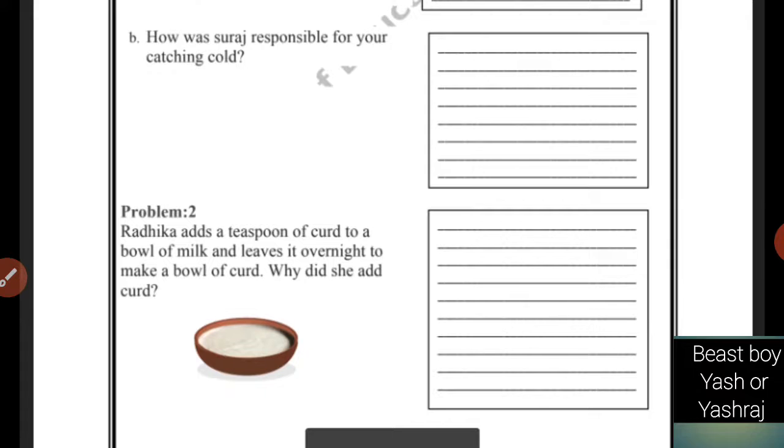Problem 2: Radhika adds a teaspoon of curd to a bowl of milk and leaves it overnight to make a bowl of curd. Why did she add curd? I want to tell you that bacteria are of two types. One is good bacteria and one is bad bacteria.